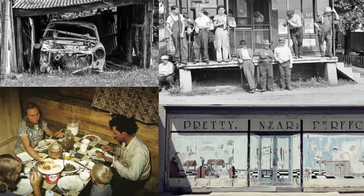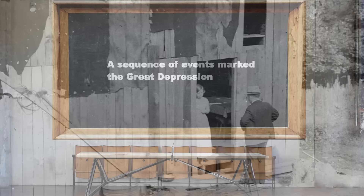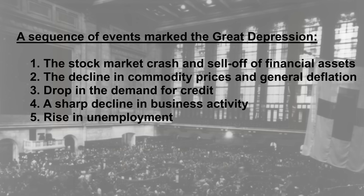A sequence of events marked the Great Depression: 1. The stock market crash and sell-off of financial assets — for example, Black Tuesday. 2. The decline in commodity prices and general deflation. 3. Drop in demand for credit. 4. A sharp decline in business activity. 5. Rise in unemployment.